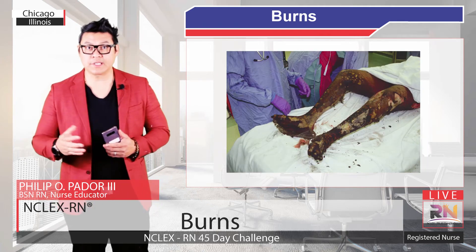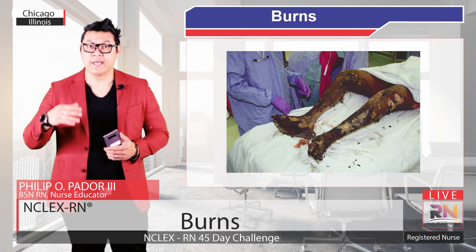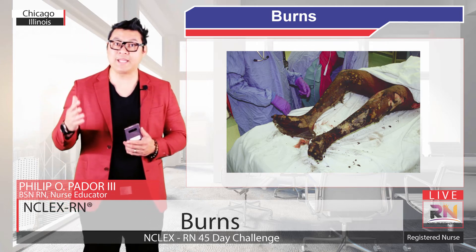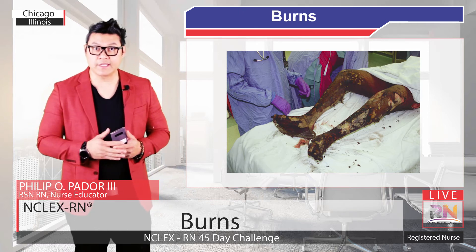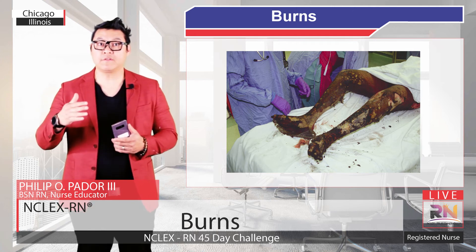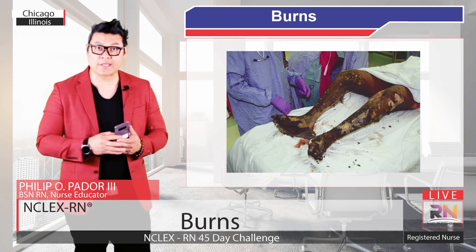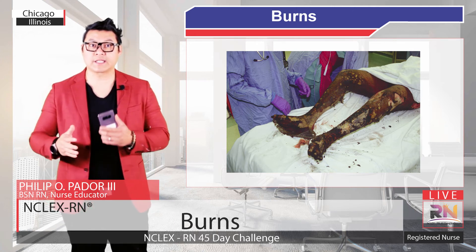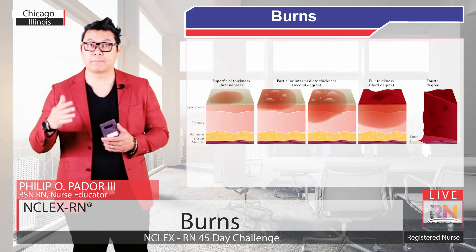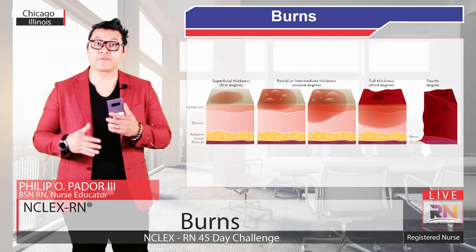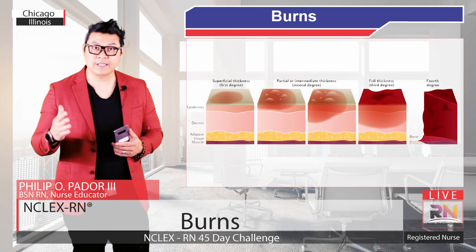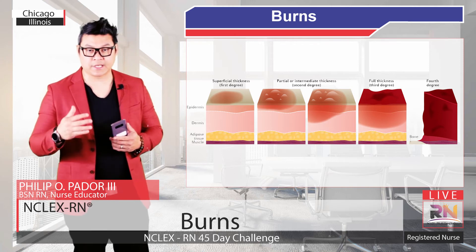Fourth degree burns are charred, black, and dry, with pain only from deep pressure, and can be painless from complete disruption of the nerve endings, with patches of dead skin. The margins of all burns often have nerve endings and can be painful. The diagnosis of a burn is often based on its appearance and the amount and type of pain, but sometimes tissue biopsies are obtained to accurately determine which layers are affected.